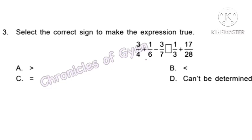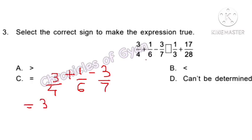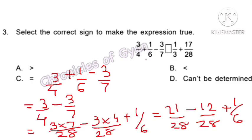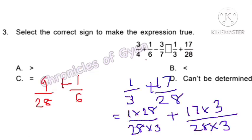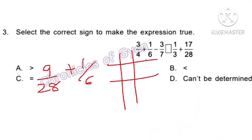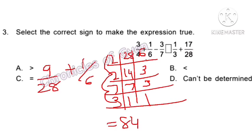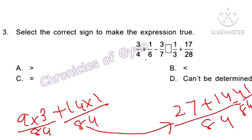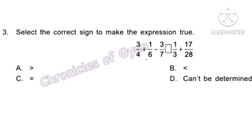Question 3. Select the correct sign to make the expression true. First, simplify 3/4 plus 1/6 minus 3/7. With LCM 28, we get 21/28 minus 12/28 plus 1/6, which gives 9/28 plus 1/6. With LCM 84, this totals 41/84. Then for 1/3 plus 17/28, with LCM 84, we get 79/84. Since 41/84 is smaller than 79/84, option B — the less than sign — is the answer.